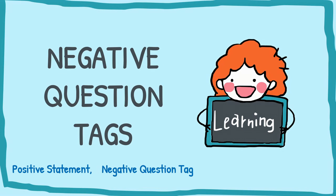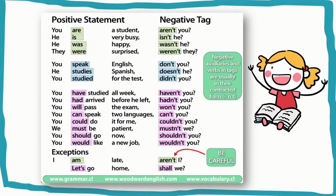Next, negative question tags. When the statement is positive, then the question tag is negative. The first examples use the verb 'to be,' and the next examples use present simple and past simple — that's why the auxiliary in the negative question tags uses 'do,' 'does,' or 'did.' The last examples use auxiliary 'have' and modal verbs.